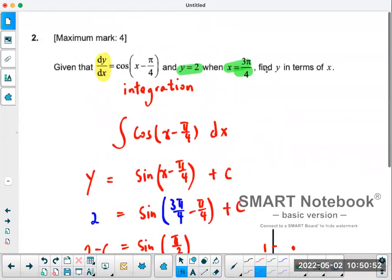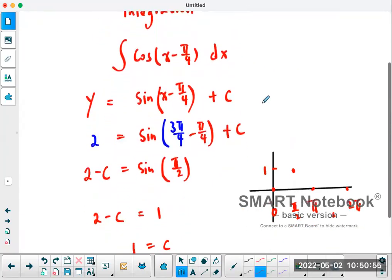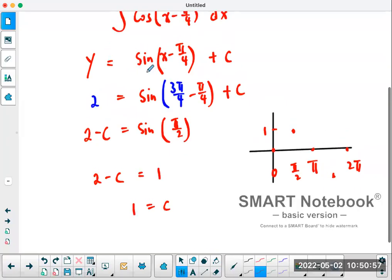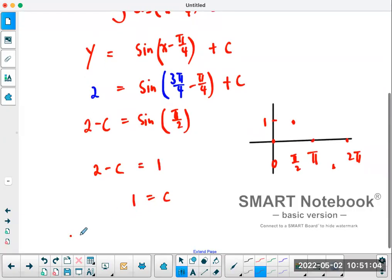So now find y in terms of x. y is going to be equal to sine x minus π over 4 plus C which is 1. So therefore y equals sine x minus π over 4 plus 1.